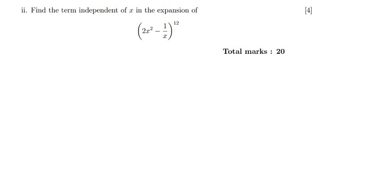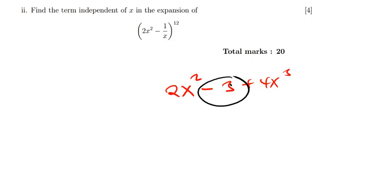We have another question for binomial expansion, which is saying: find the term independent of x in the expansion. This question had four marks. When we say find the term independent of x, it is a term which does not have x in the expansion. For example, in an expansion like 3x squared minus 3 plus 4x cubed, the term independent of x is negative 3.